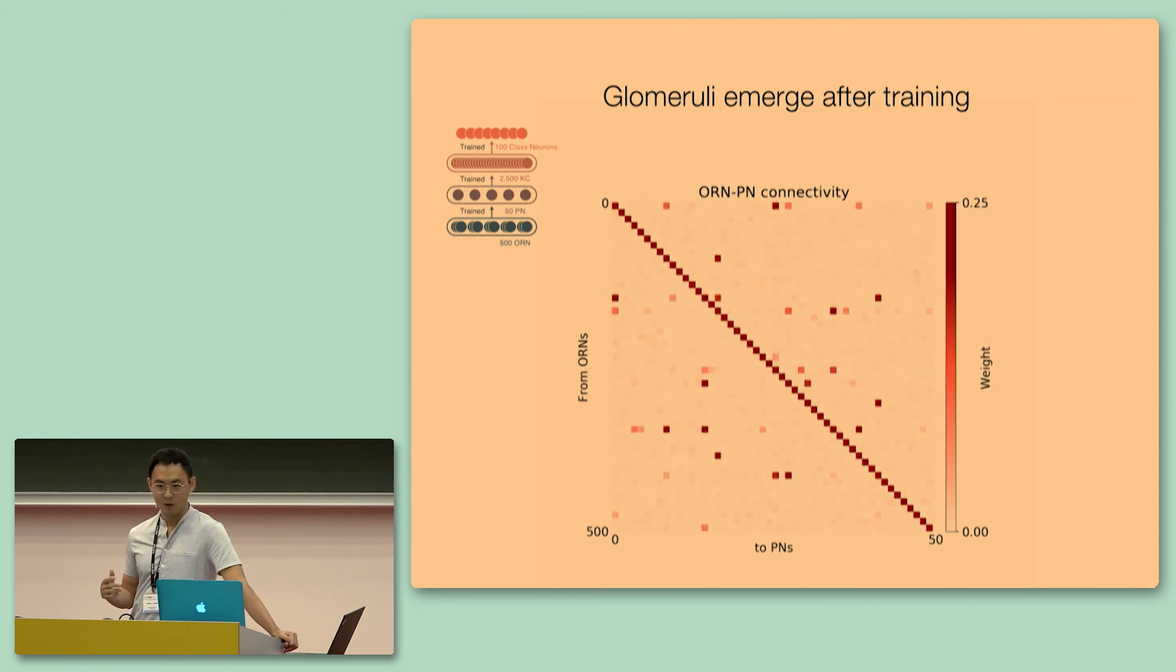And the first thing that we observe is that connectivity very rapidly converges to the glomerular solution. You see that after training, there is a one-to-one correspondence between ORNs expressing the same olfactory receptor and to the same projection neuron. And this representation tiles the entire field of all ORNs onto all PNs.